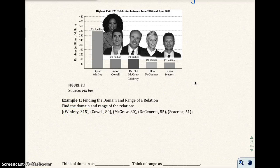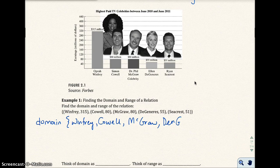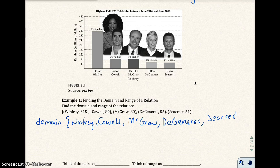Now they want you to find the domain. For the domain, give me the set of all x components, so we're going to list all the x values. We have Winfrey, Cowell, McGraw, DeGeneres, and Seacrest. This right here is our domain.